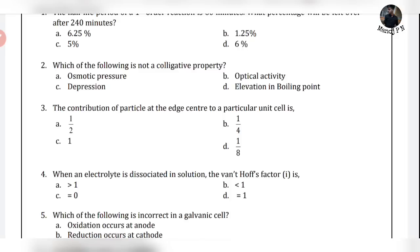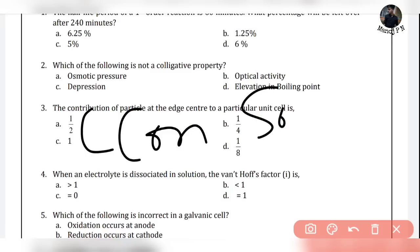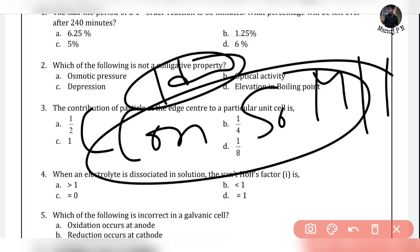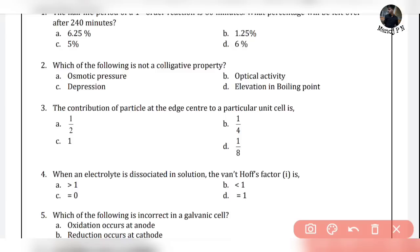First, we need to know the colligative property definition. Colligative properties of a solution are properties that depend upon the concentration of solute molecules or ions — but not upon the identity of the solute. Examples include elevation of boiling point, depression of freezing point, and osmotic pressure — all of these depend on the concentration of solute molecules.